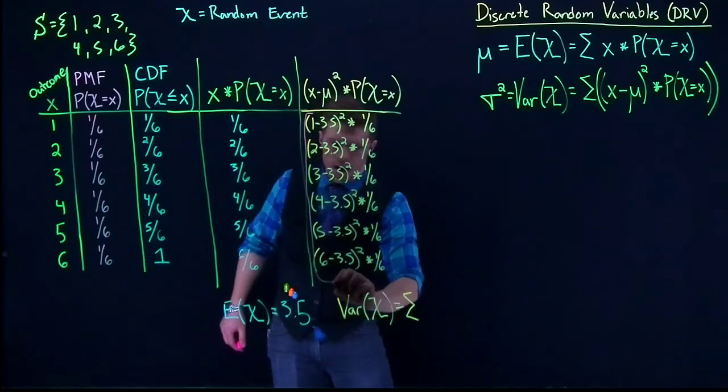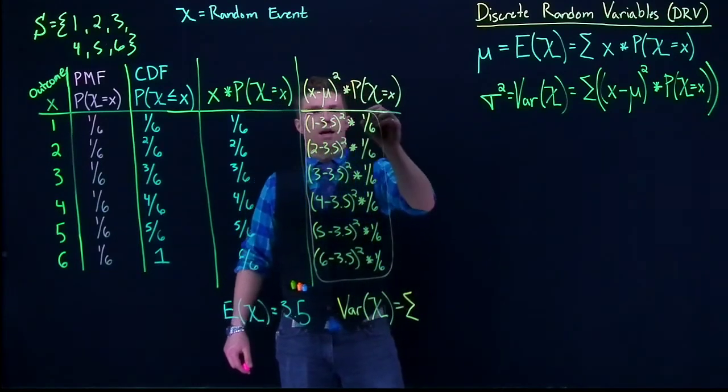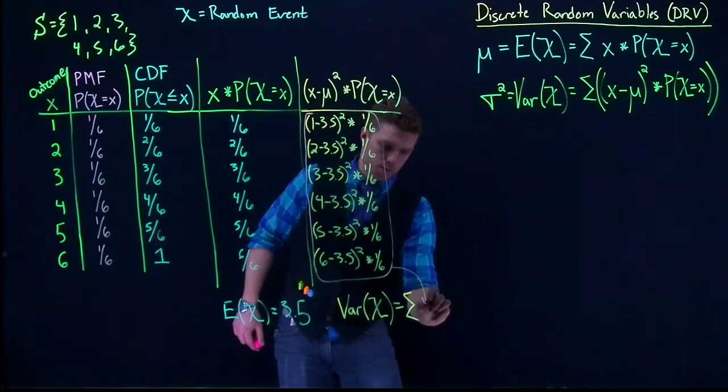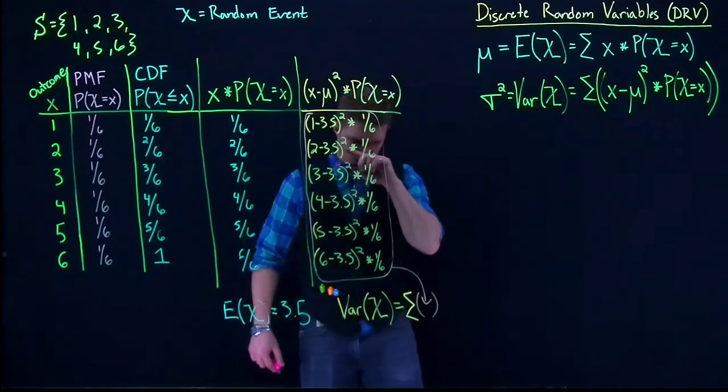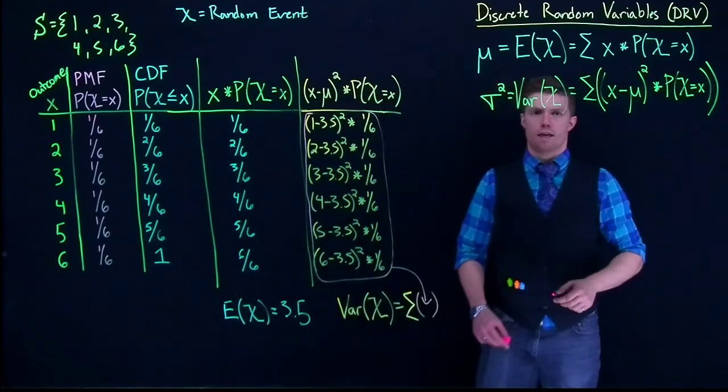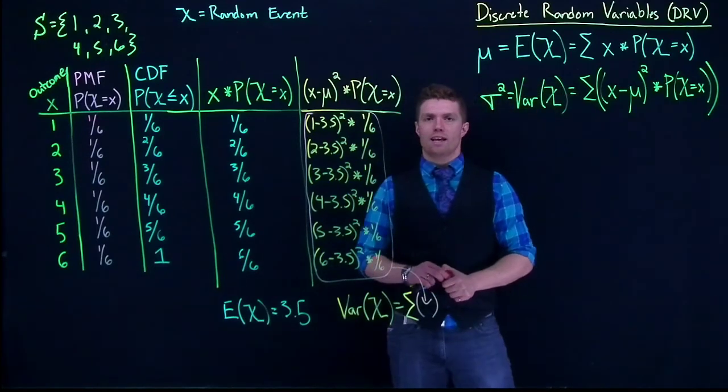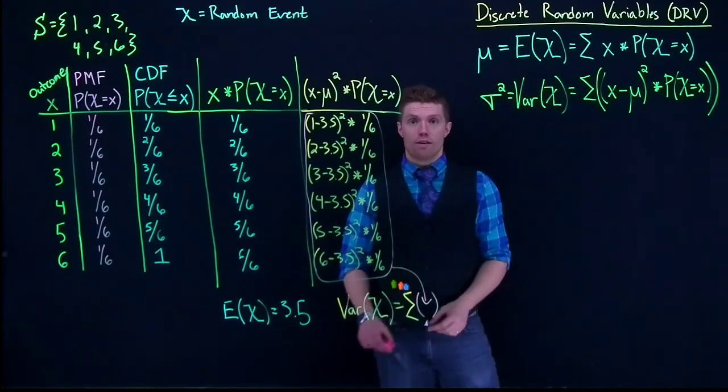We'd actually calculate out those values and we'd put them right there, so the sum of all of that. Once we calculated out that sum, we would have our variance.